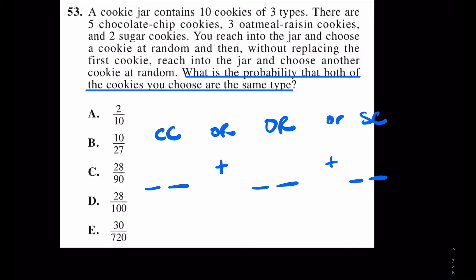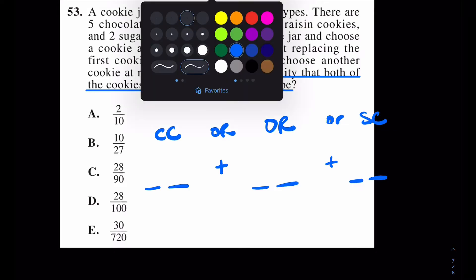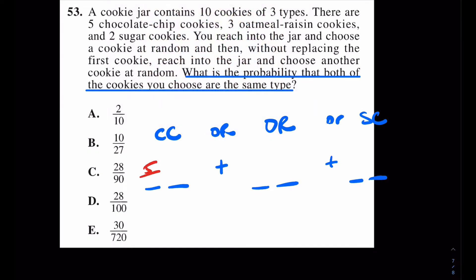At which point we can recognize, well, wait a second, what's the chance of me drawing two chocolate chips? Well, 5 out of 10 times 4 out of 9. Plus, what's oatmeal raisin? 3 out of 10 times 2 out of 9. Plus, sugar cookie, well, sugar cookie could be 2 out of 10 times 1 out of 9. When you add up all these probabilities, really, when you multiply this, and then add, multiply this, and add, and multiply this, and add, you should have answer choice C.